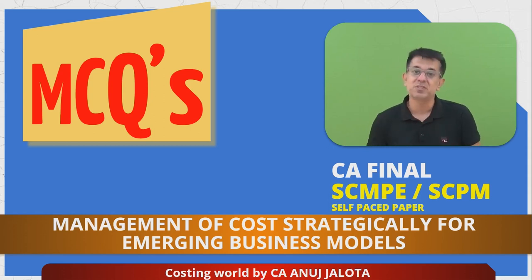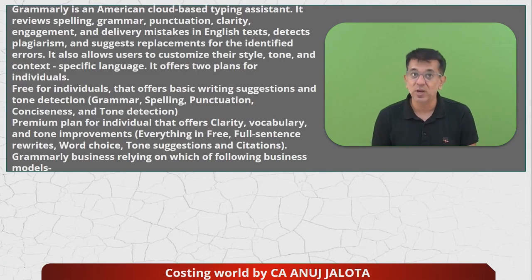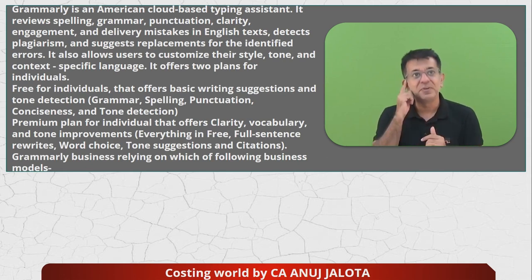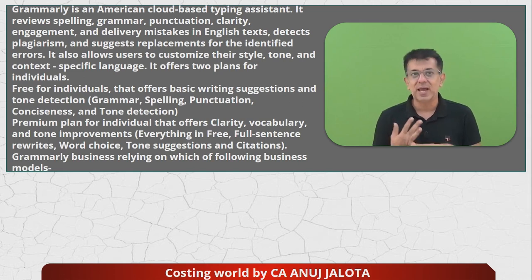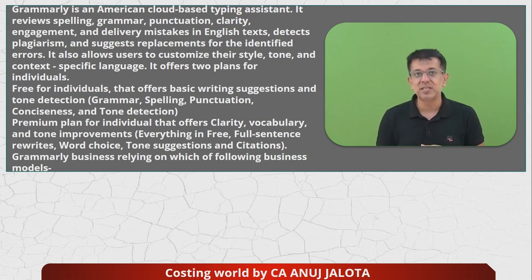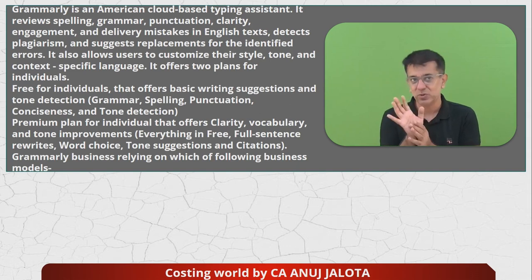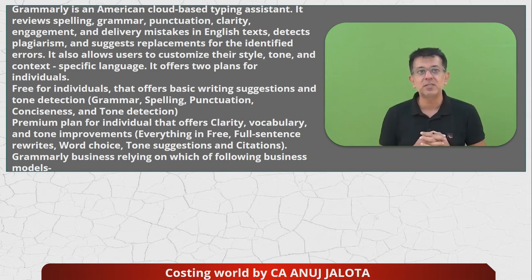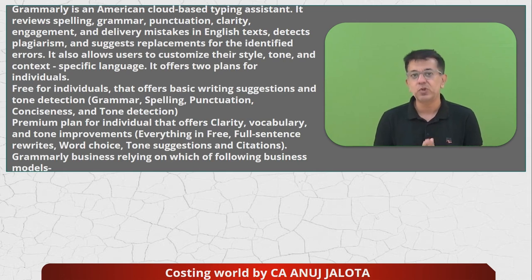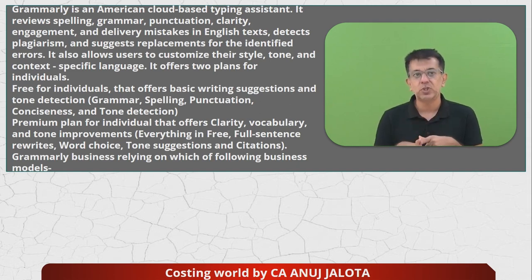This chapter tries to talk about all such revolutionary businesses. Grammarly — I don't know how many of you have used it; I use it a lot, basically to find out mistakes in the module. Grammarly is an American cloud-based typing assistant. It reviews spelling, grammar, punctuation, clarity, engagement, and delivery mistakes in English text, detects plagiarism, and suggests replacements for identified errors. It is far better than the spell check in Microsoft Word. It also allows users to customize their style, tone, and context-specific language. It offers two plans for individuals — the first one is free, offering basic writing suggestions and tone detection: grammar, spelling, punctuation, conciseness, and tone detection.